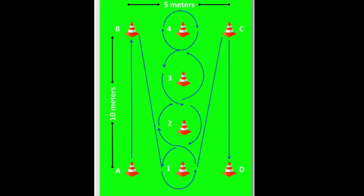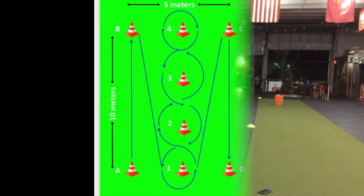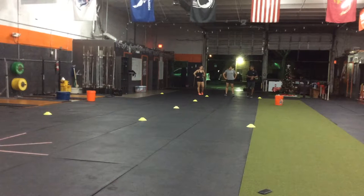While there is some variability to the layout of the assessment, we will be using the one depicted in the diagram. You will set up four cones in a rectangle, ten meters long, five meters wide, with four cones dissecting the middle.